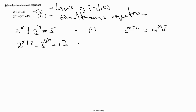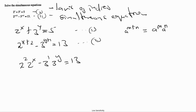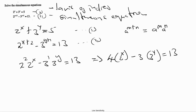We can simplify the second equation by applying that law. We express it as 2^2 · 2^x minus 3^1 · 3^y = 13. So we end up with 4 · 2^x minus 3 · 3^y = 13. That is our new second equation.